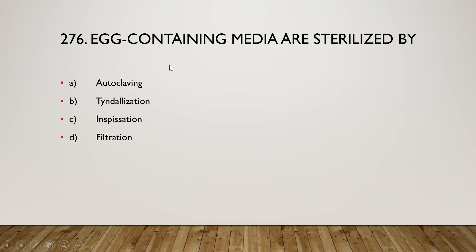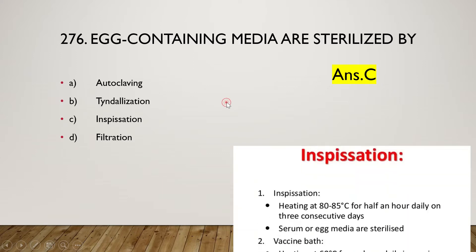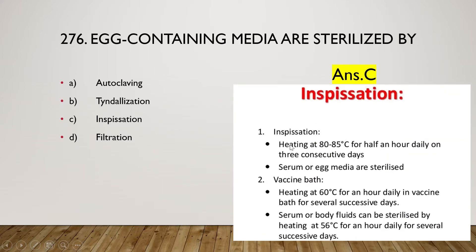The first question is: egg-containing media are sterilized by (A) autoclaving, (B) tyndallization, (C) inspissation, or (D) filtration. The right answer is option C, inspissation. Inspissation is a process of heating at 80 to 85 degrees Celsius for half an hour daily on three successive days, where serum or egg media are sterilized.